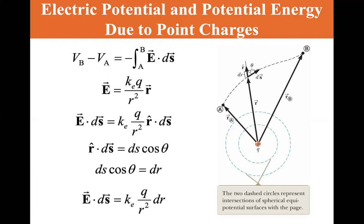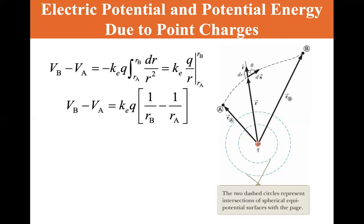So E dot dS is equal to kₑ Q over r squared dr. So VB minus VA is equal to minus kₑ Q integral from rA to rB of dr over r squared, which is equal to kₑ Q over r evaluated from rA to rB. So VB minus VA is equal to kₑ Q times one over rB minus one over rA.